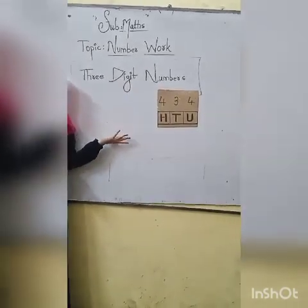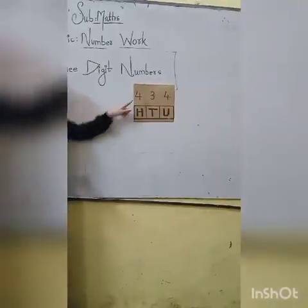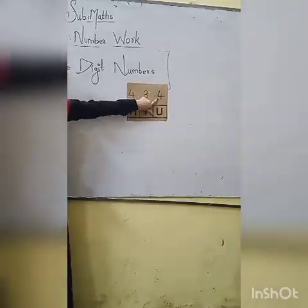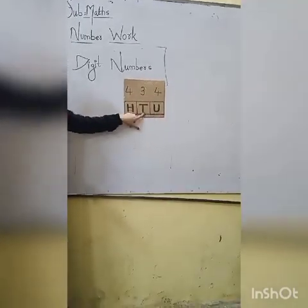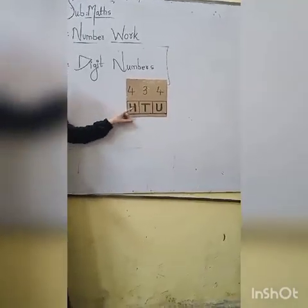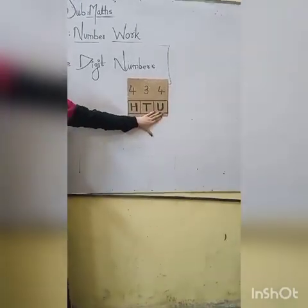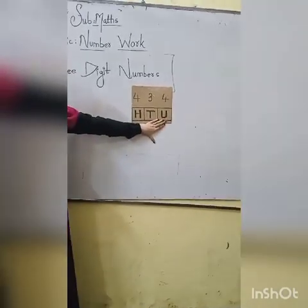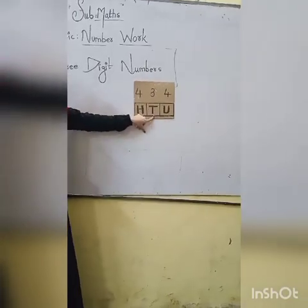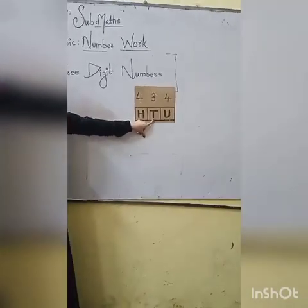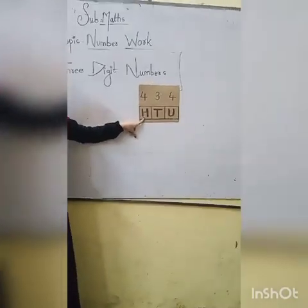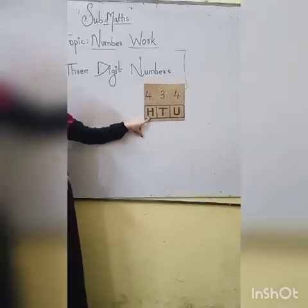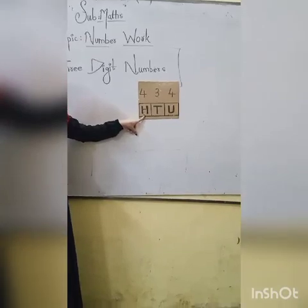So what is a three digit number? In three digit numbers, we have three places. The very first place is known as units. The second place is known as tens, and the third place is known as hundreds.